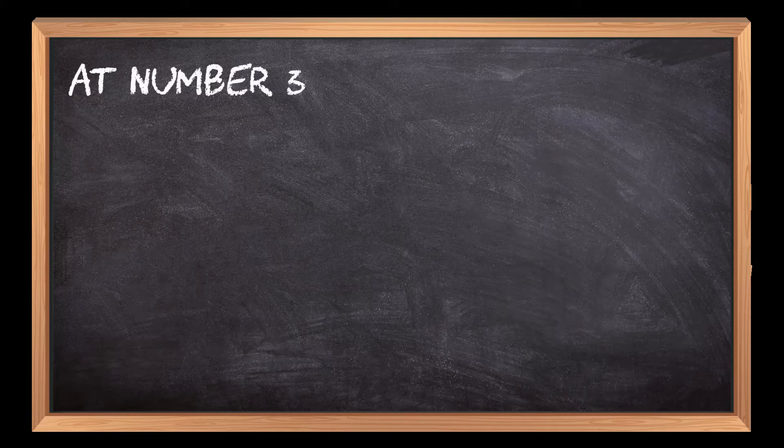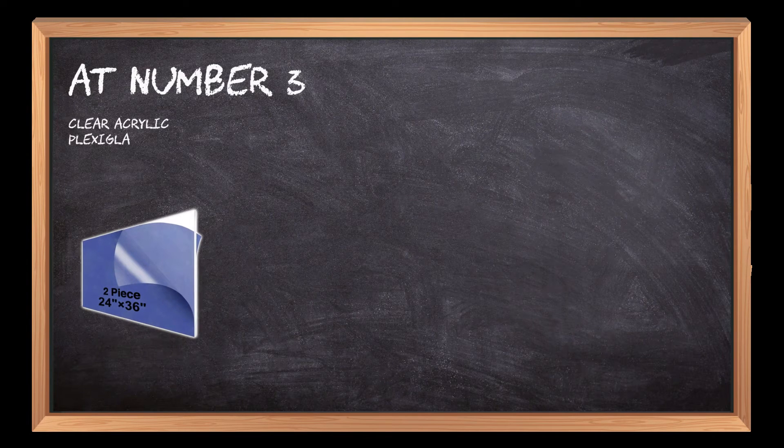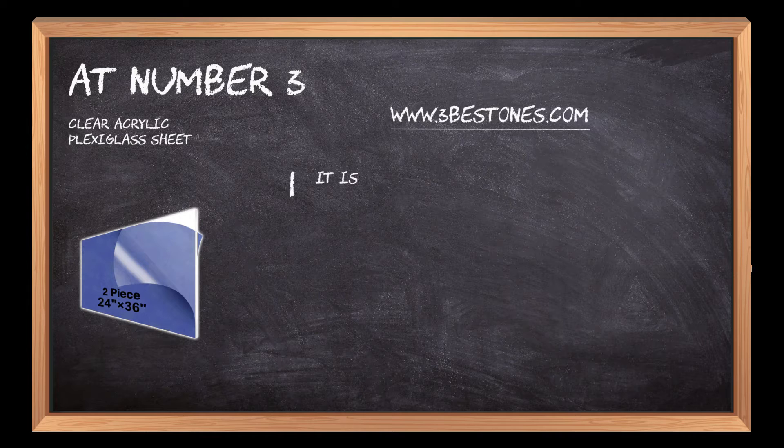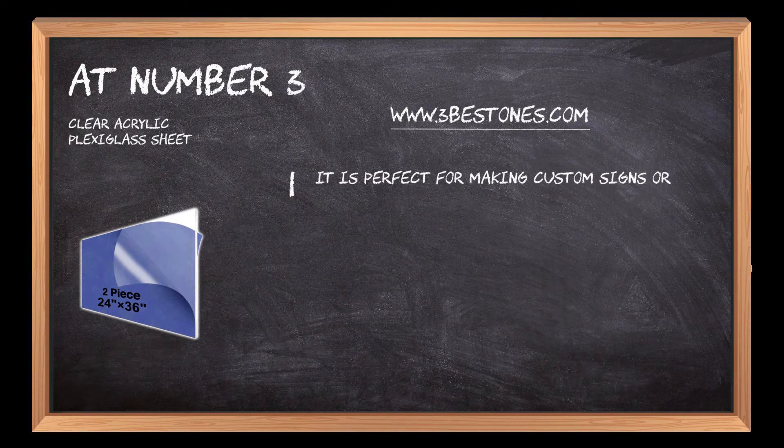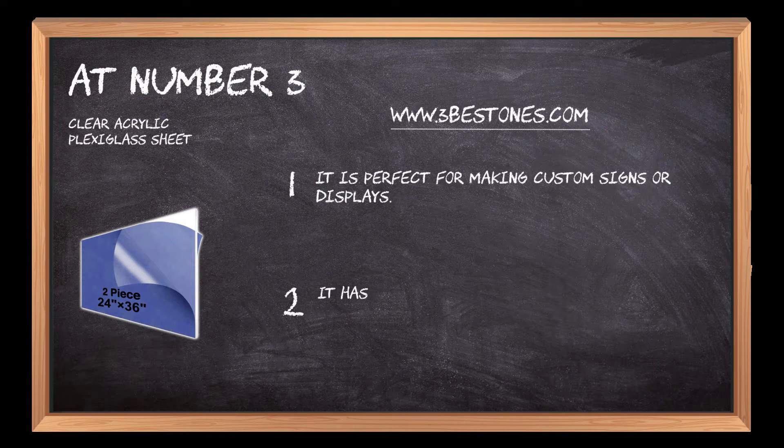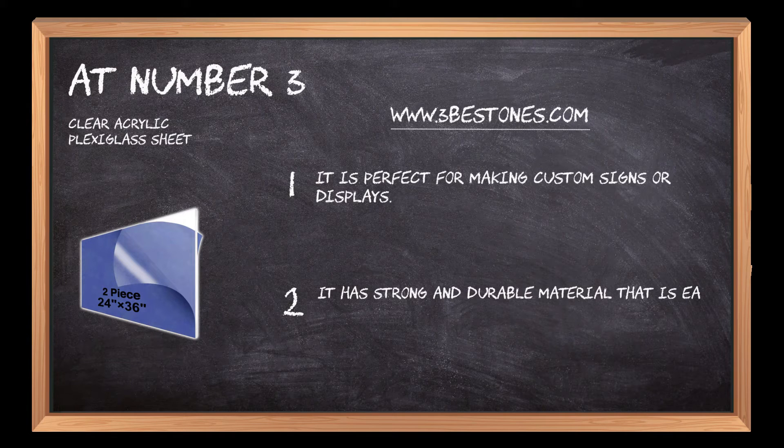At number 3, Clear Acrylic Plexiglass Sheet. It is perfect for making custom signs or displays. It has strong and durable material that is easy to cut with a saw.